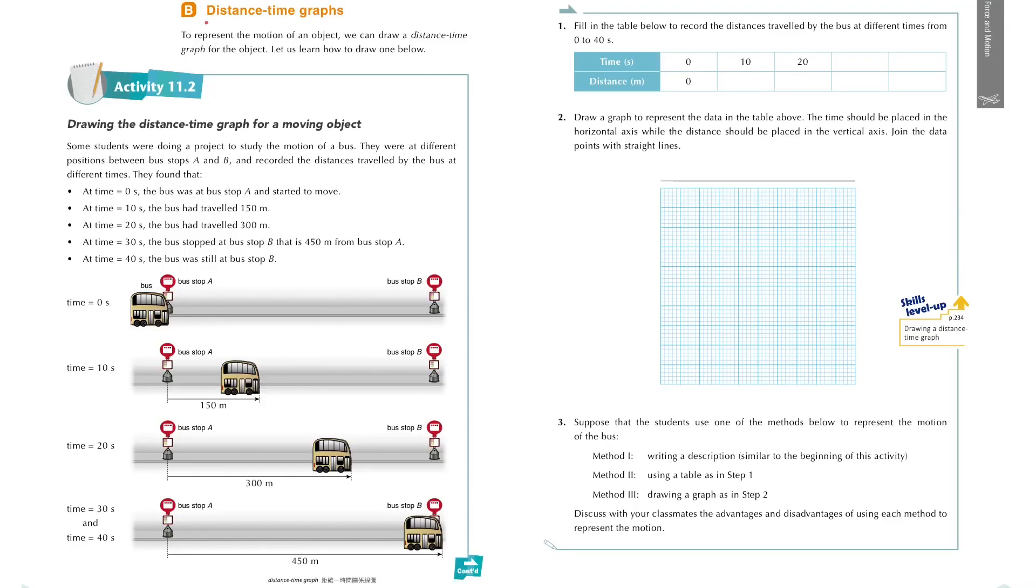Here we talk about the distance-time graph, which is the most important graph to represent the relationship between the distance traveled and the time of an object.